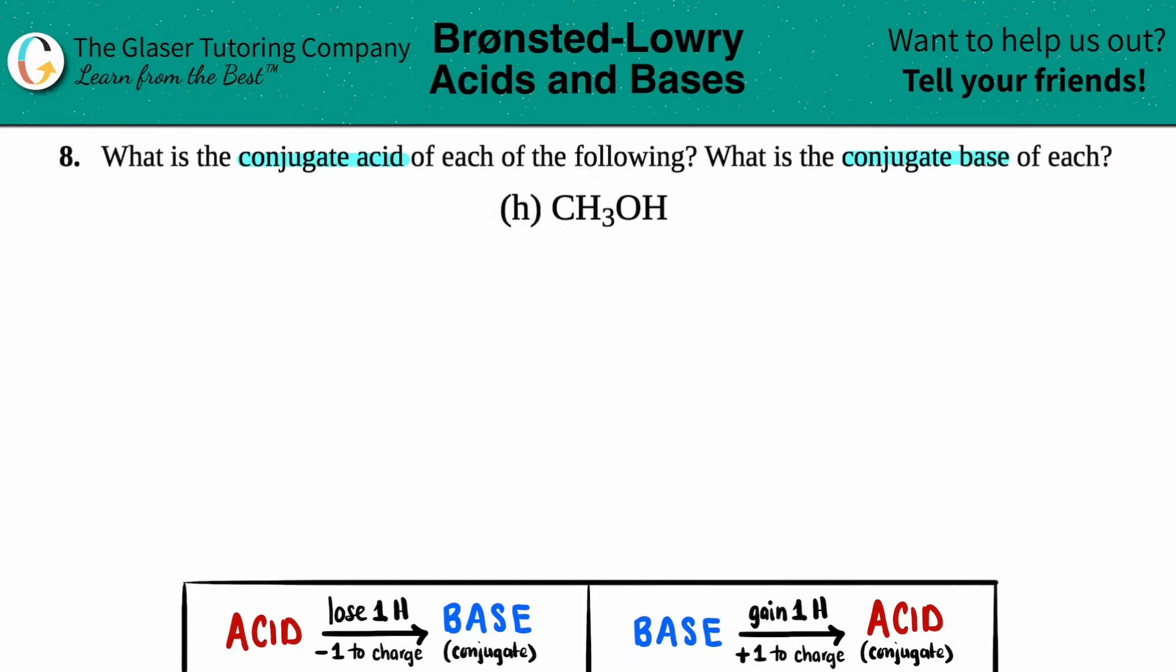So let's split this down the middle and all we got to do is just find those conjugates. Let's pretend that CH3OH, the methanol, is acting as an acid. What would be the conjugate base?